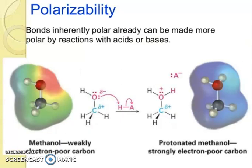So bonds inherently polar already can be made more polar by reactions with acids or bases. So methanol has weakly electron-poor carbon. Now protonated methanol has strongly electron-poor carbon. You can see.